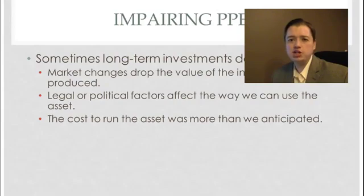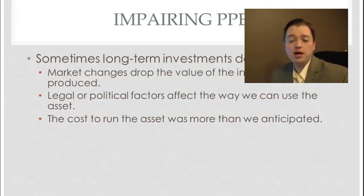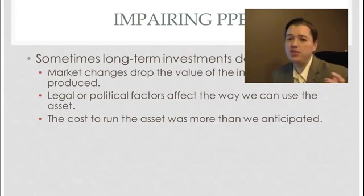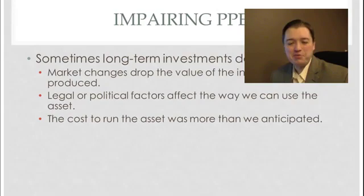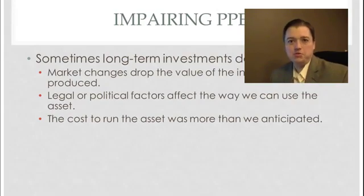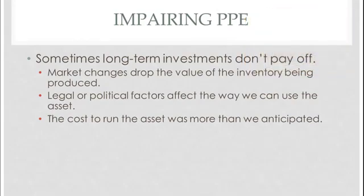An example of a government or political issue could be having to shut down a plant because of new EPA requirements, or the FDA saying you bought all that equipment but it's not up to the new code — shut it down. Another reason is when we've been operating in a foreign country and that foreign country seizes all of our assets, which would definitely mean we couldn't use them like we thought we could. Anytime something happens that gives you reason to believe your asset value has dropped, you have to go through the steps and do this test.